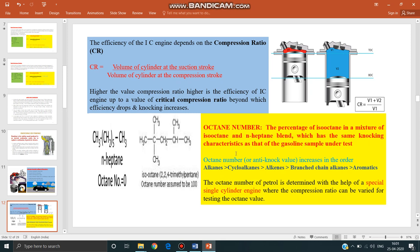Here octane number: alkanes have very low antiknocking characteristic or low octane number. Octane number is least for alkanes and it is highest for aromatics.